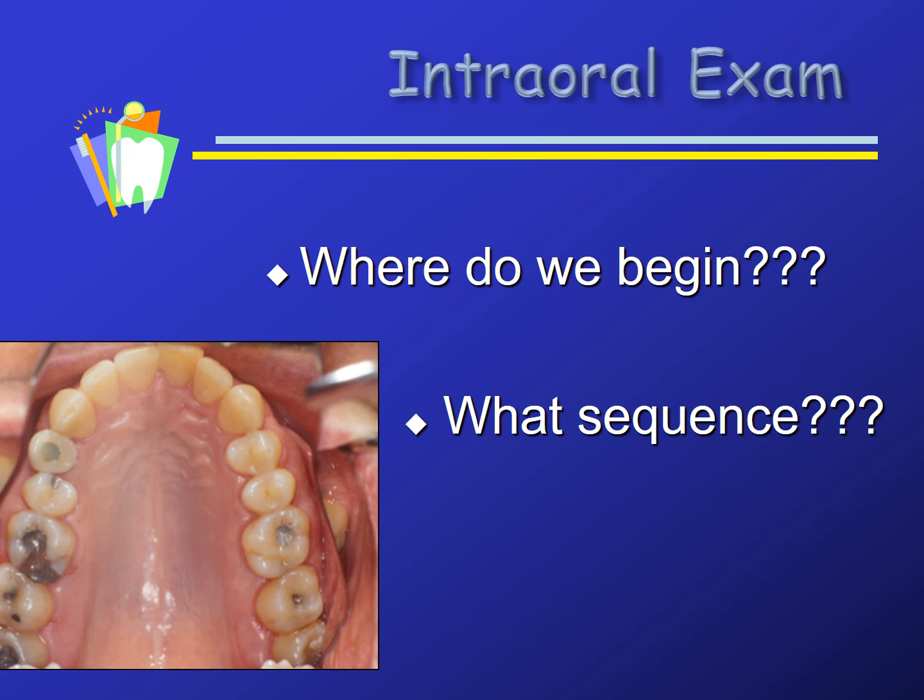If we were to jump around the mouth, such as starting with an upper front tooth, then assessing a lower molar and then a lower canine, the operator is likely to get confused and skip an area. Some patients will perceive that you are jumping around and missing areas. If we follow a sequence, our assistant will know that sequence and it makes charting more efficient.